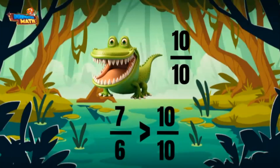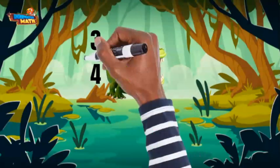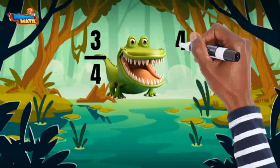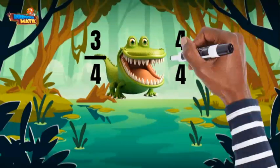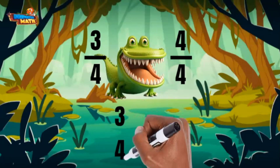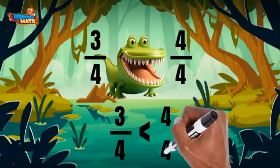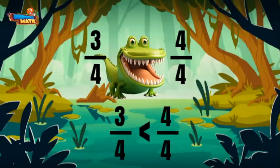Here's the last one for today: three fourths and four fourths. Four fourths is the same as one whole. Three fourths is less than a whole because the numerator is smaller than the denominator. Four fourths is greater.